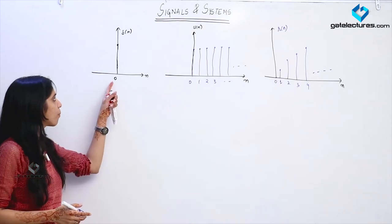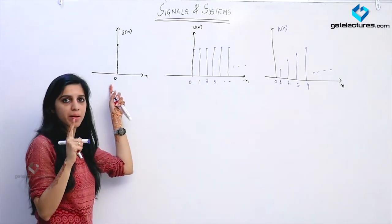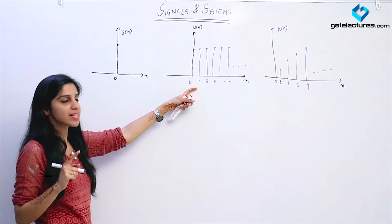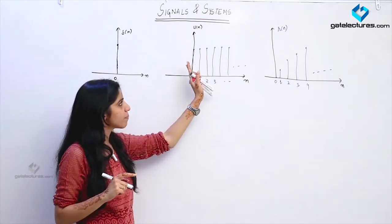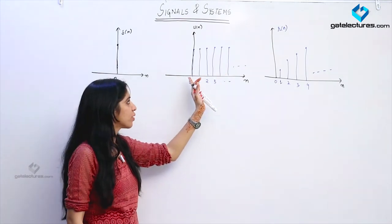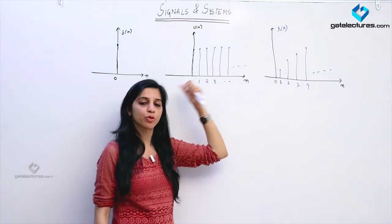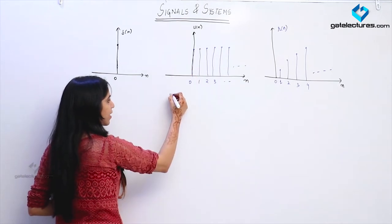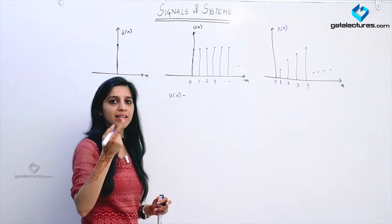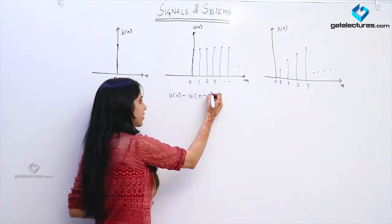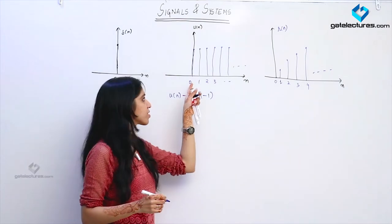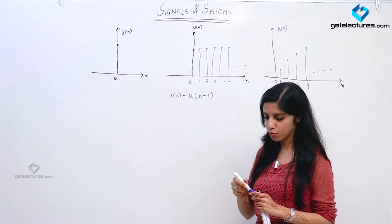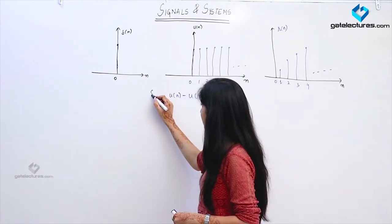Now, if I want to obtain just a single impulse function which occurs at n equal to 0, if I subtract all the impulses from n equal to 1 onwards, I am going to obtain a single impulse which occurs at n equal to 0. So if I write u[n] and subtract the shifted signal u[n-1] — which starts from n equal to 1 and contains all the impulses other than the one at n equal to 0 — then I am going to obtain δ[n].